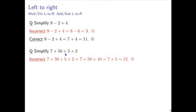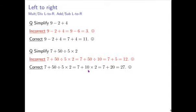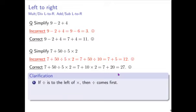Here you see what's done incorrectly. Instead, we need to focus on the division first: 50 divided by 5 simplifies to 10. Then we do the multiplication before the addition, so 10 times 2 becomes 20. There's still the 7 plus, which needed to be written so that the equal sign was valid. 7 plus 20 equals 27.